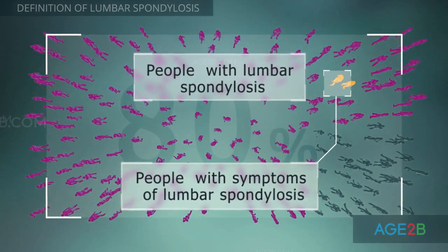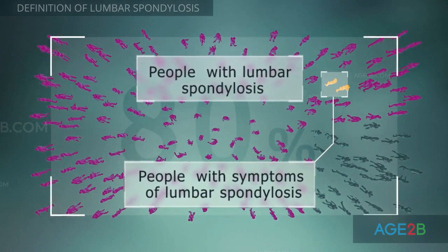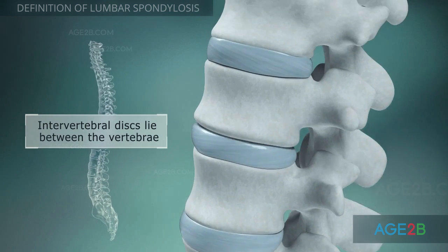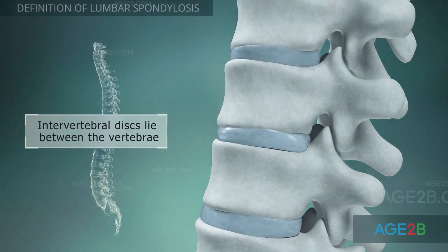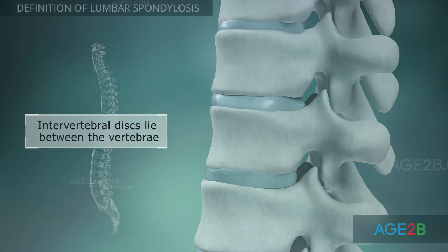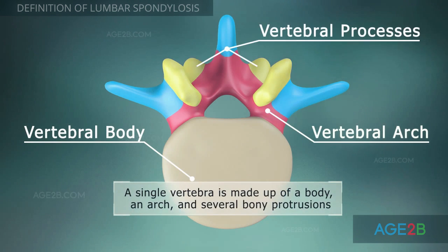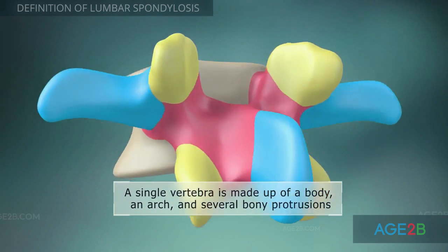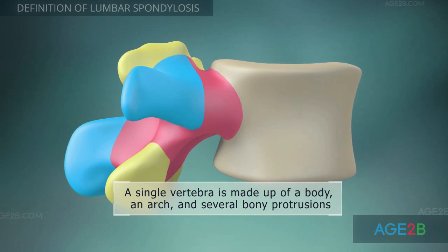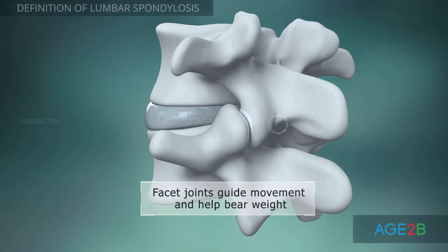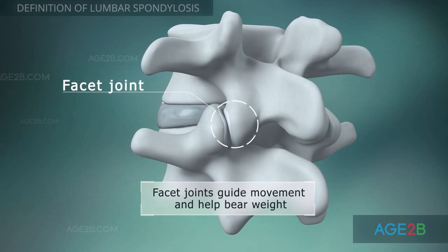Only three percent of people with lumbar spondylosis have symptoms of this condition. The spine is made up of 33 individual bones called vertebrae, which are separated by intervertebral discs. A typical lumbar vertebra consists of a body and a vertebral arch, which has several processes for articular and muscular attachments.